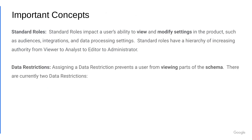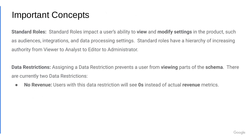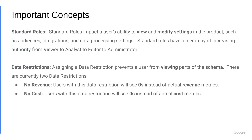Data restrictions: assigning a data restriction prevents a user from viewing parts of the schema — again, the dimensions and metrics. There are currently two data restrictions in the product. No revenue: a user with this data restriction will see zeros instead of actual revenue metrics. Similarly, the no cost restriction: users with this restriction will see zeros instead of the actual cost metrics.